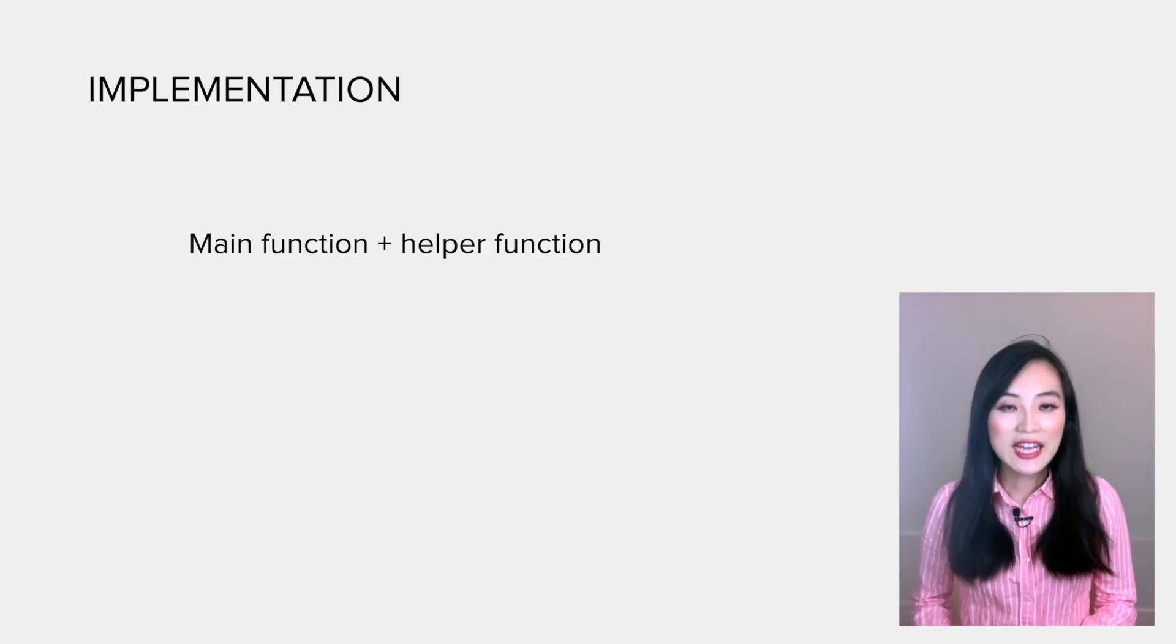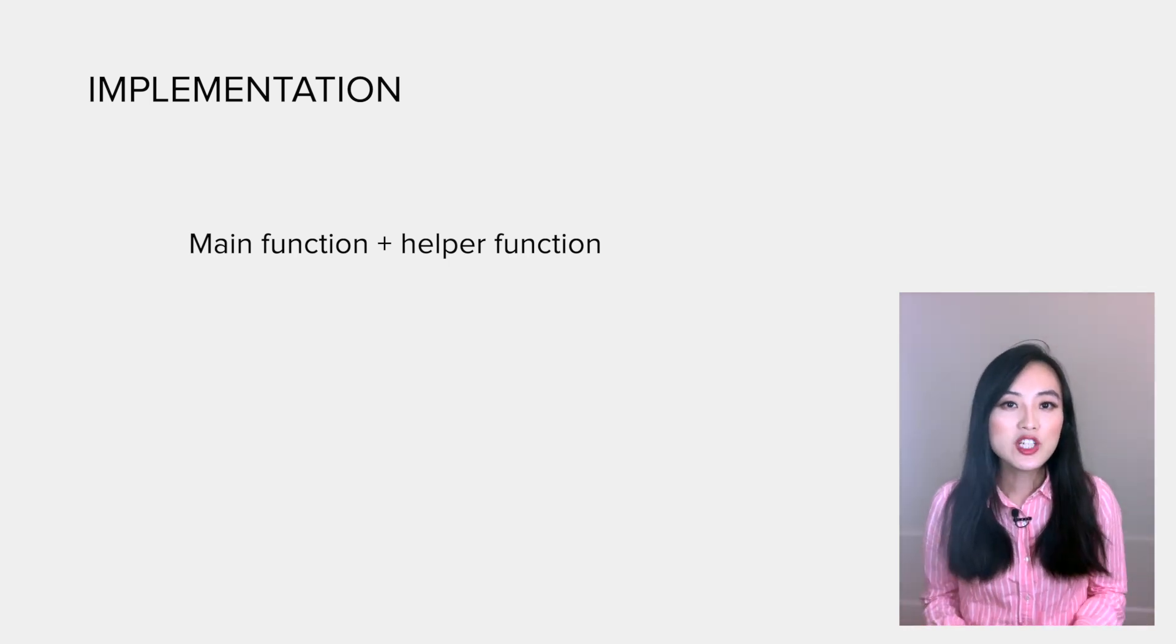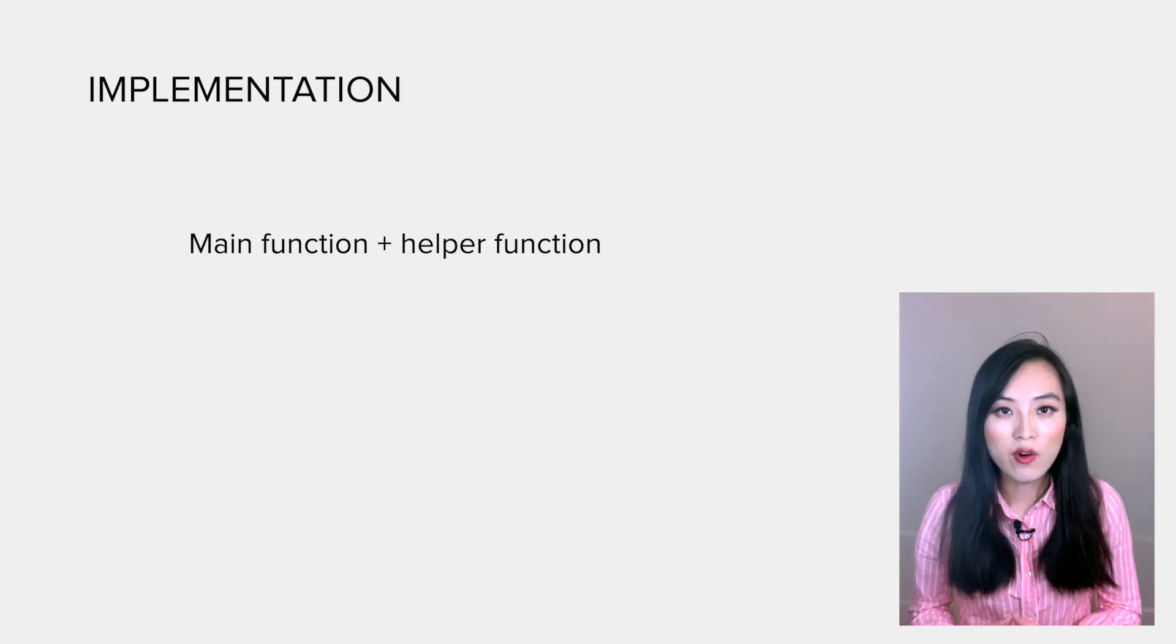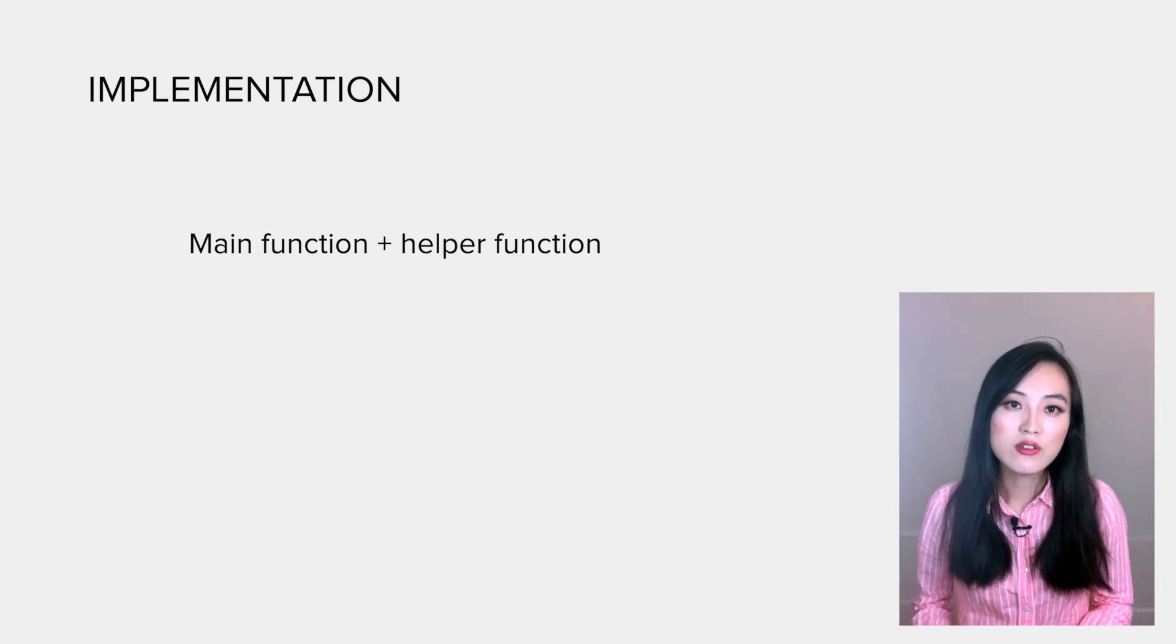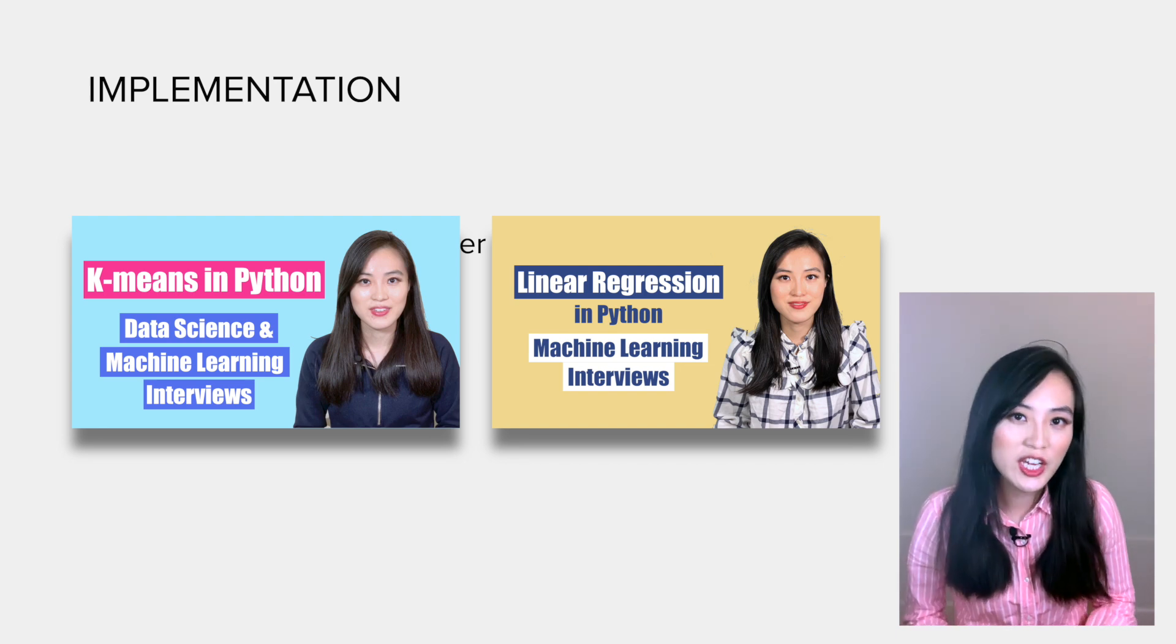Okay, I just gave you an overview of logistic regression. Let's see how to implement it. For implementation, we follow the main plus helper function approach. The main function contains the main logic of the algorithm and it leaves the details to be handled by helper functions. If you have watched other machine learning videos on my channel, you might already be familiar with the benefit of this approach.